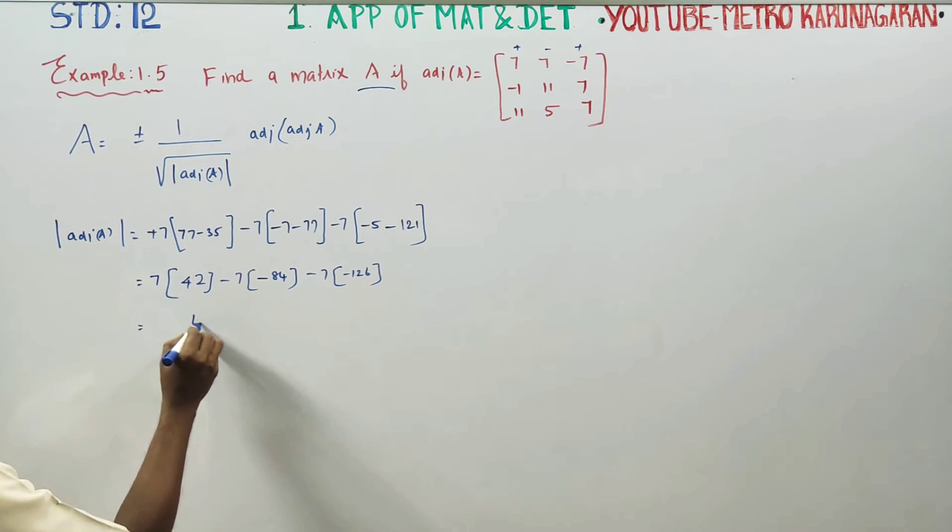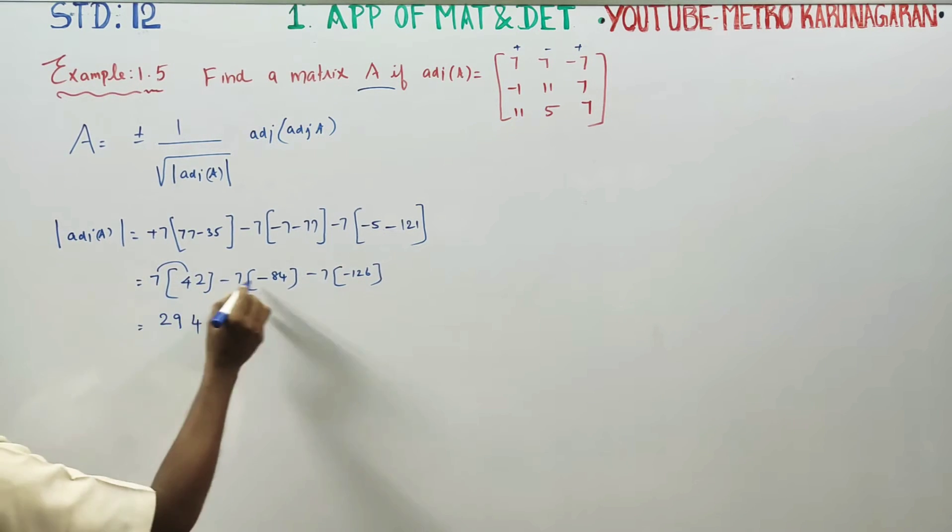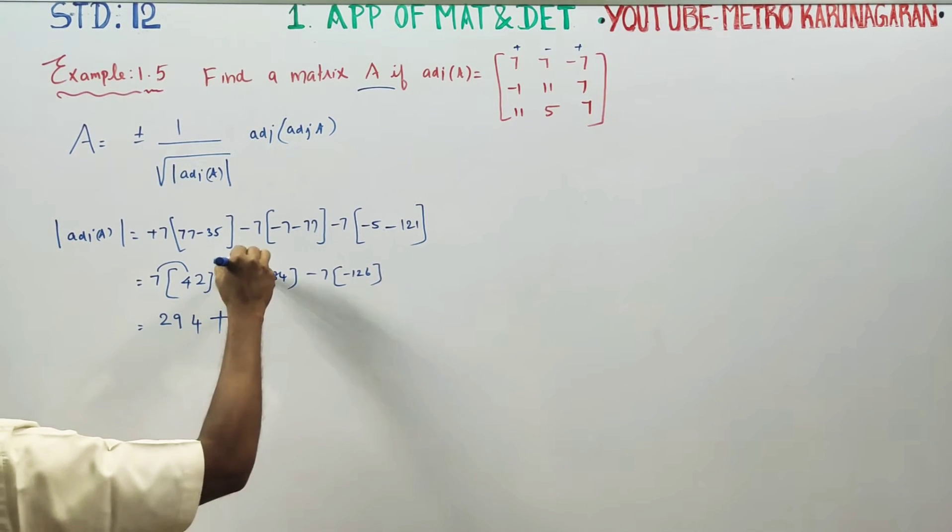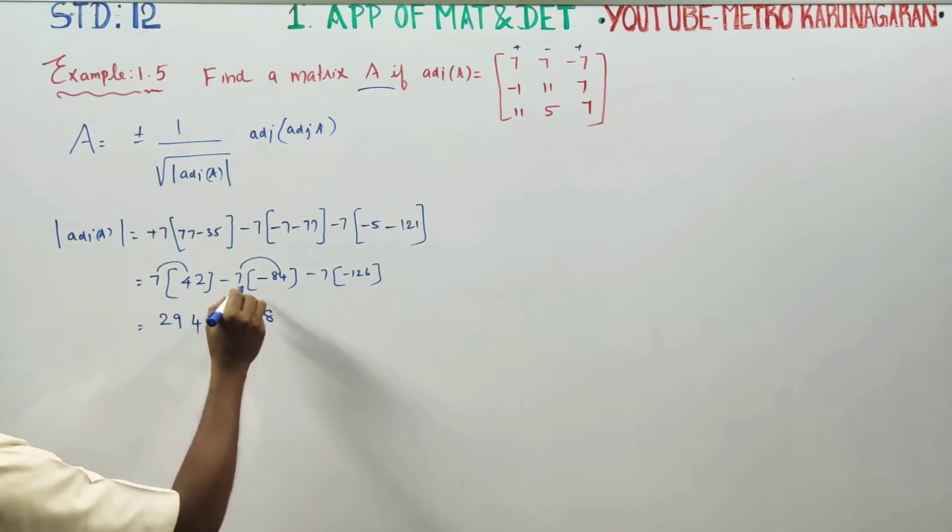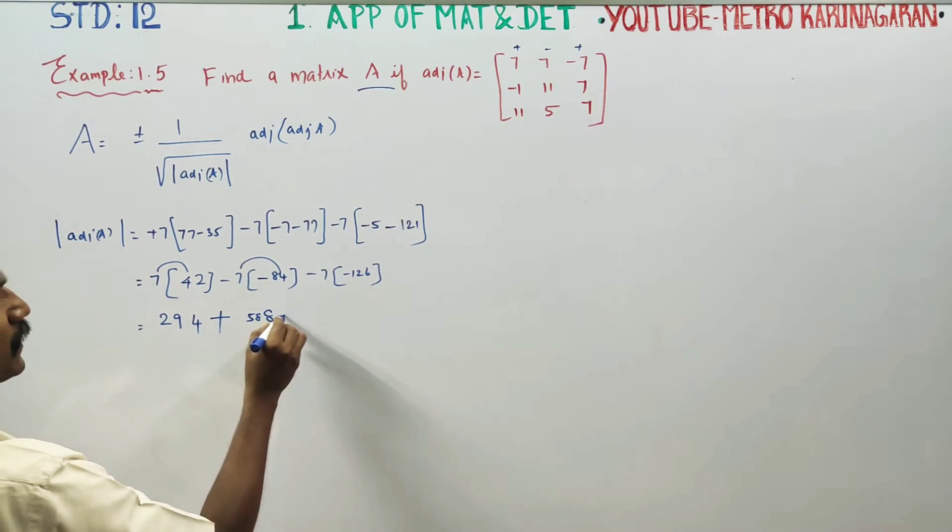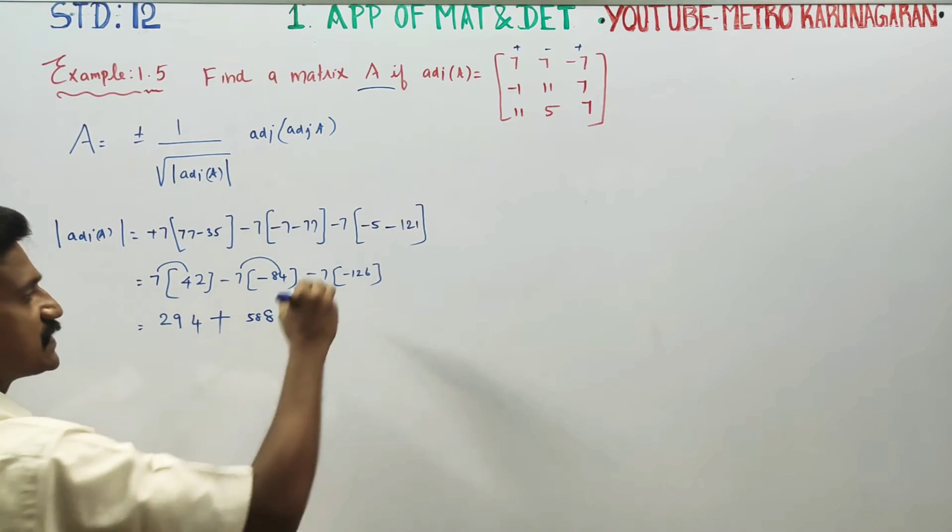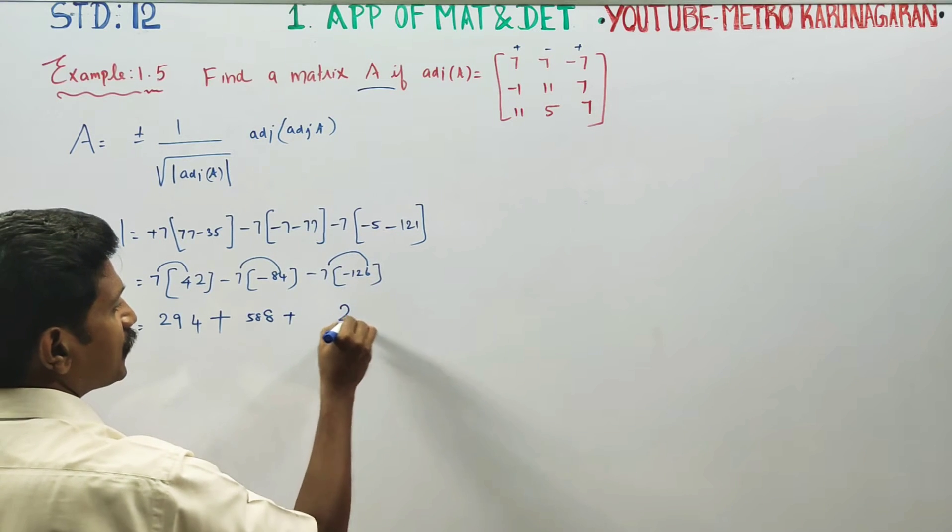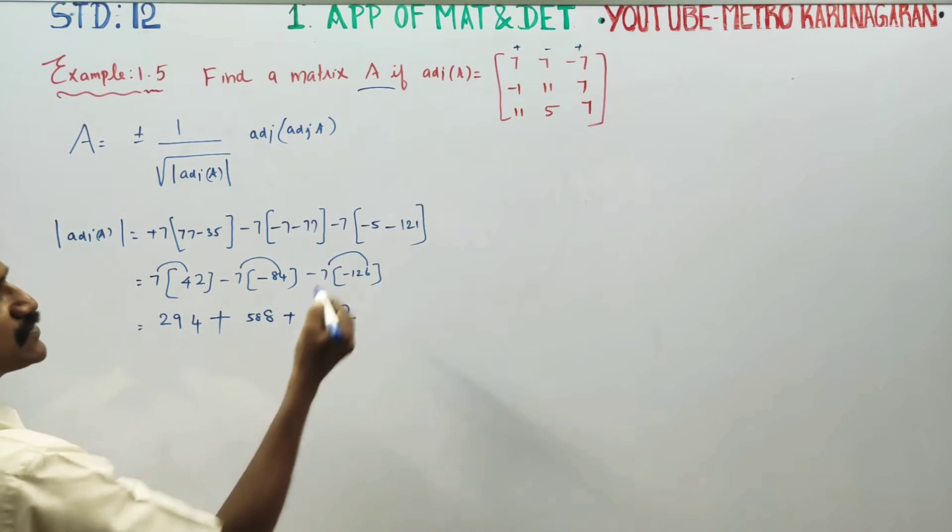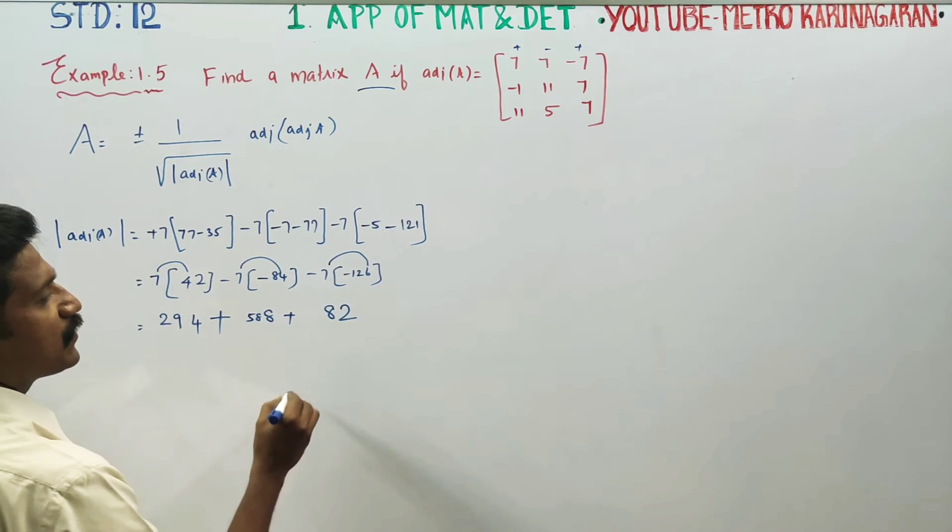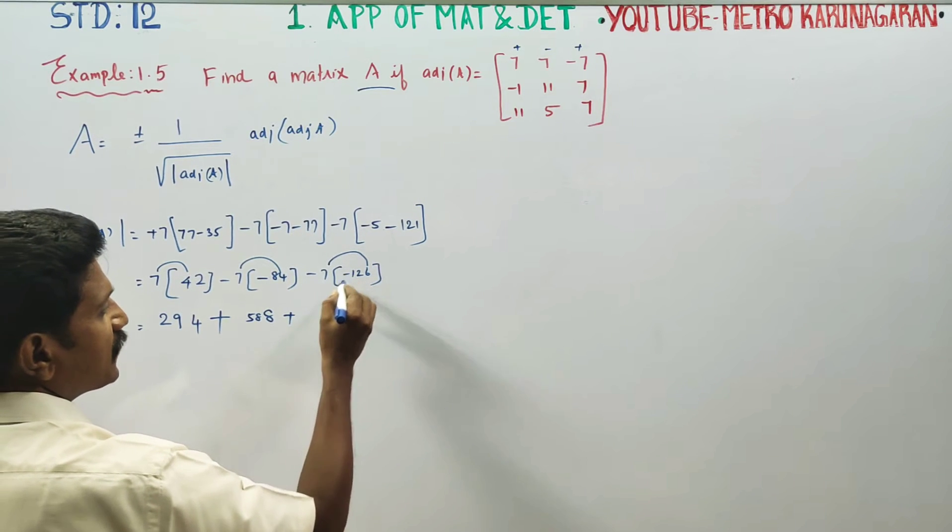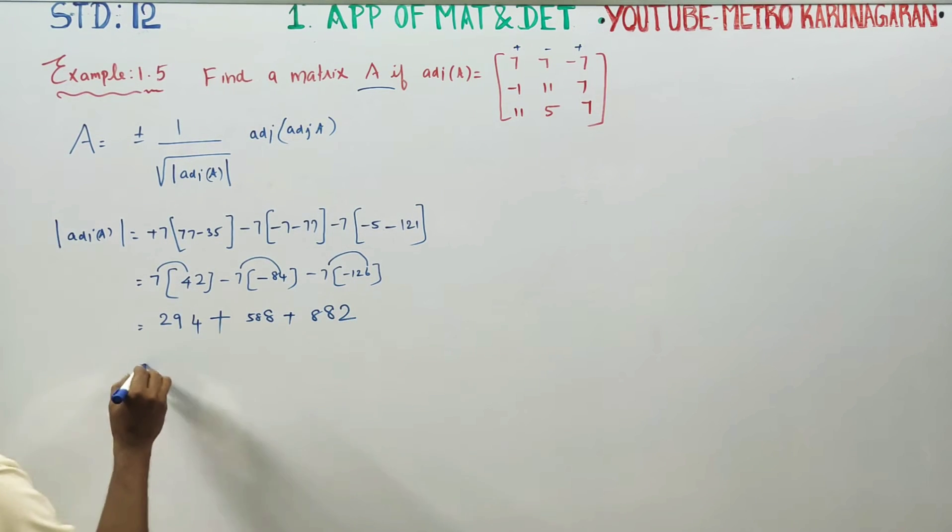Minus 7 plus 7 is 84 minus 7 minus 126. 7, 2 is of 14, 1 carry 28 and 29. Minus into minus becomes plus 7, 4 is of 28, 2 carry 7, 8 is of 56, 57, 58. Minus into minus plus 7, 6 are 42, 4 carry 7, 2 is of 14, 18, 1 carry 7, 1 is 7 plus 1, 8. Then you have to add this, you will be getting 1, 7, 6, 4.